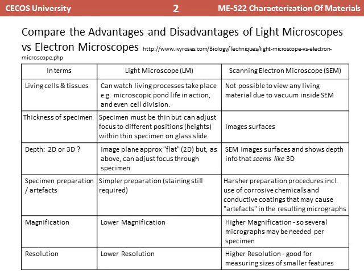Moving to advantages and disadvantages: in the light microscope, we can view living cells and tissues because the specimen is placed under normal room conditions. In scanning electron microscopy, the sample is placed under very high vacuum, so the chances of survival of any living cell or tissue are nearly zero. Therefore, it is impossible to view living cells and tissues in scanning electron microscopy.